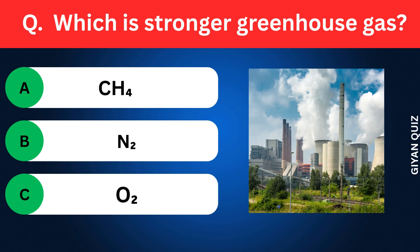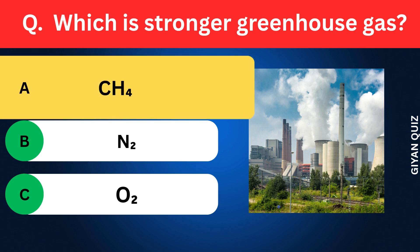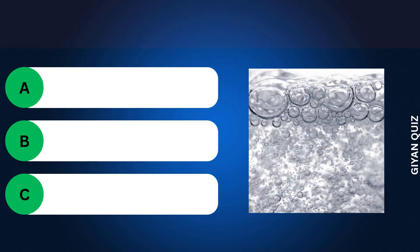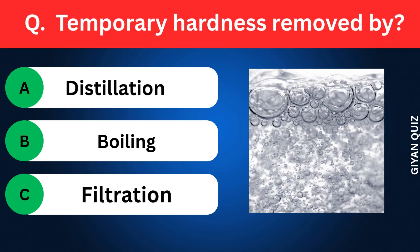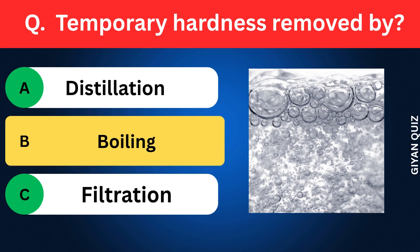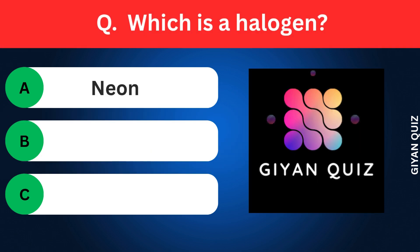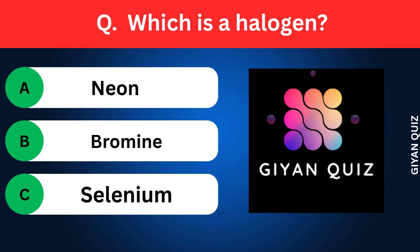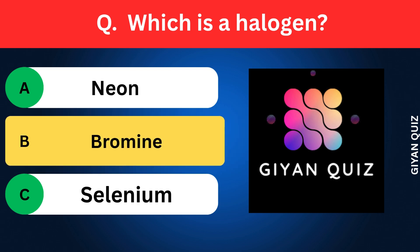Haber process makes? Options: Urea, Ammonia, Nitric acid. Correct answer: ammonia. Neutralization gives? Options: Only salt, Salt plus water, Only water. Correct answer: salt plus water. Which is the stronger greenhouse gas? Options: Methane, Nitrogen, Oxygen. Correct answer: methane. Temporary hardness removed by? Options: Distillation, Boiling, Filtration. Correct answer: boiling. Which is a halogen? Options: Neon, Bromine, Selenium. Correct answer: bromine.